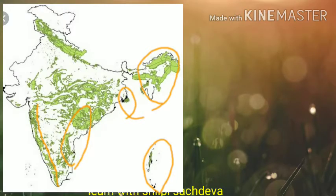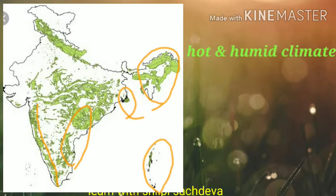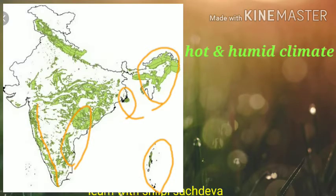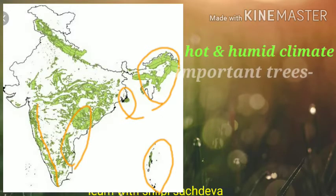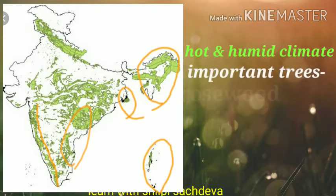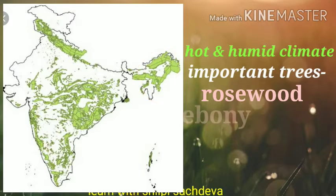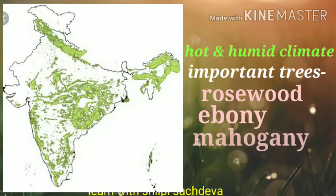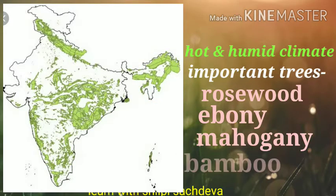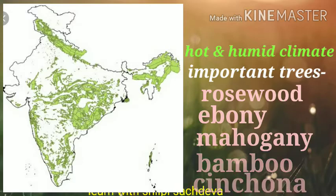These areas experience hot and humid climate with a short dry season. The important trees of these forests are rosewood, ebony, mahogany, bamboo and cinchona.